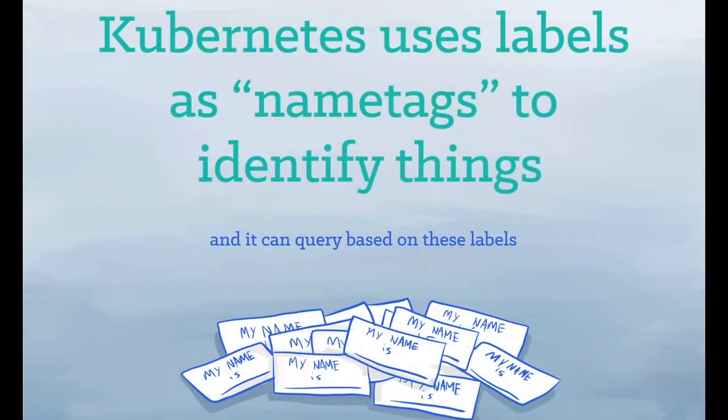Kubernetes uses labels as name tags to identify things, and it can query based on these labels. Labels are open-ended. You can use them to indicate role, stability, or other important attributes.